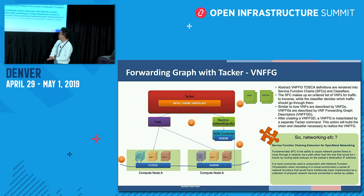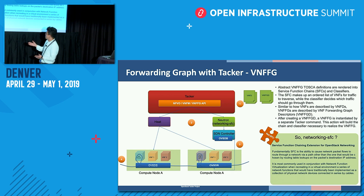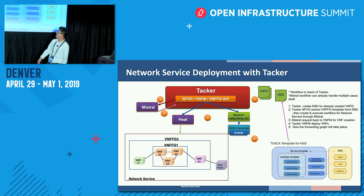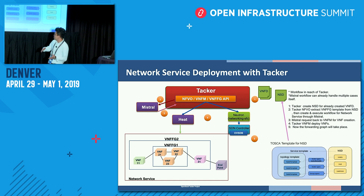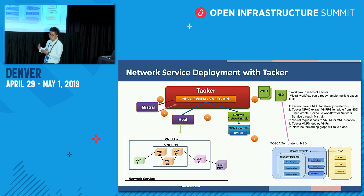TechLight supports several descriptors. One of them is the VNF forwarding descriptor. If the user uses the VNF forwarding descriptor, the user can create a VNF forwarding graph as shown in the figure. TechLight also supports network service descriptors. One of the big differences between VNF forwarding descriptors and network service descriptors is how many VNF forwarding graphs it has — the network service descriptor can define many VNF forwarding graphs in one template.